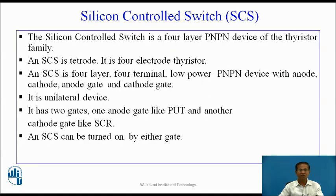The Silicon Controlled Switch (SCS) is a four-layer PNPN device and one of the members from the thyristor family. An SCS is a tetrode — it is a four-electrode thyristor. It is a four-layer, four-terminal, low-power PNPN device having four terminals: anode, cathode, anode gate, and cathode gate. It is a unilateral device. It has two gates: one anode gate like PUT and another cathode gate like SCR.